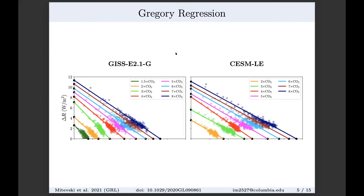In the Gregory regression, focusing on the GISS model, from 1.5x CO2 up to 8x CO2 we see a weakening of the slope — lambda gets less negative. But at intermediate CO2 scenarios, especially at 3x CO2, we see a steepening between 2x and 3x CO2. This happens at 3x CO2 in GISS and at 4x CO2 in CESM, shown in red.